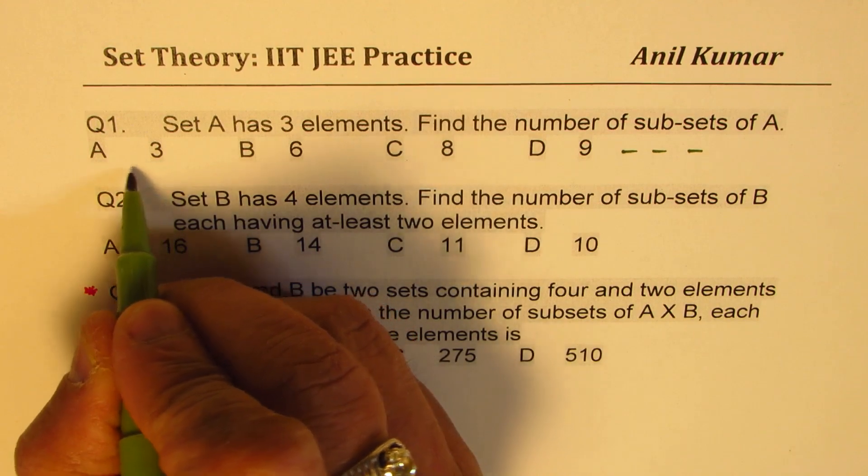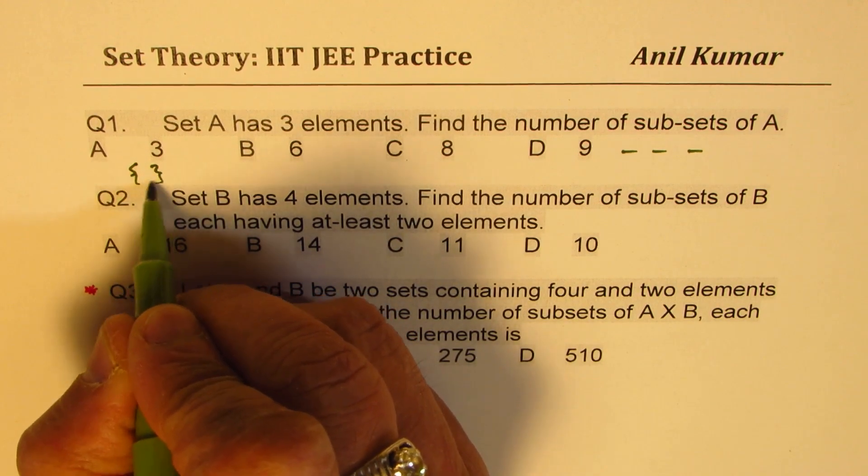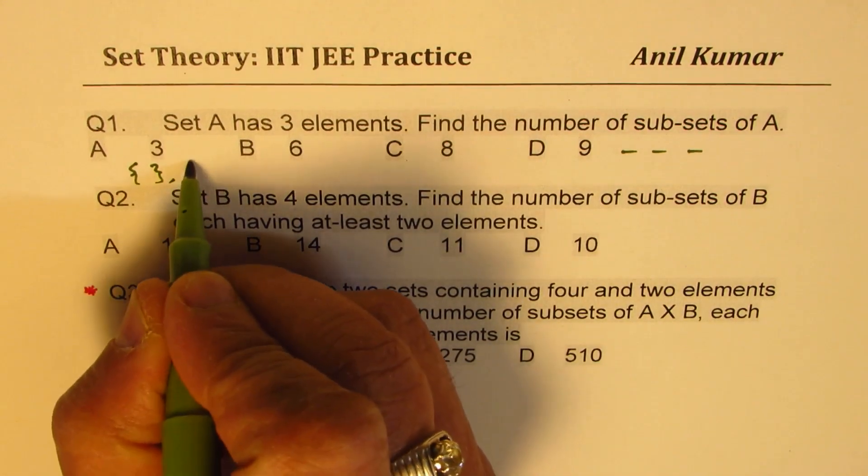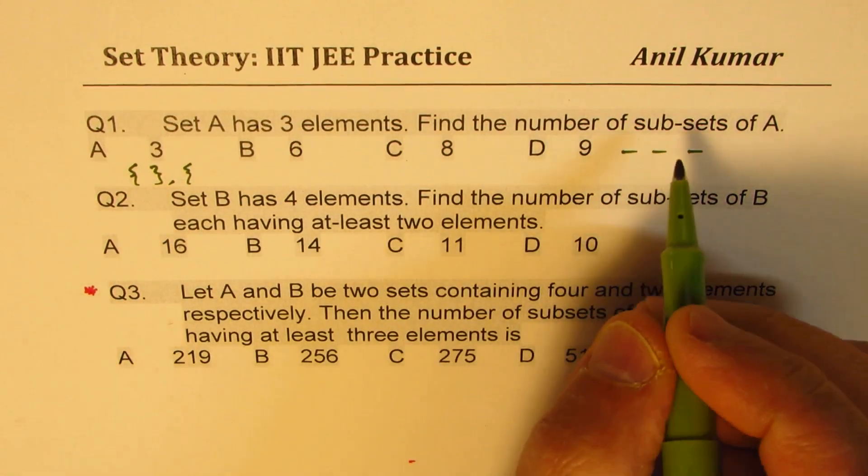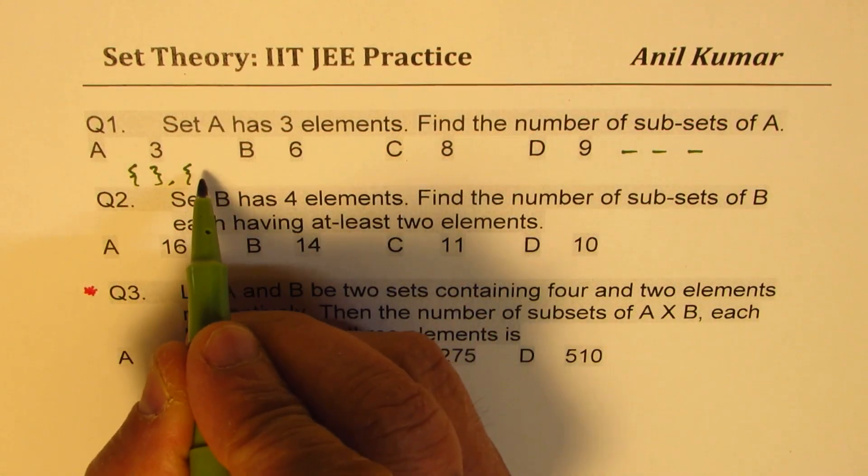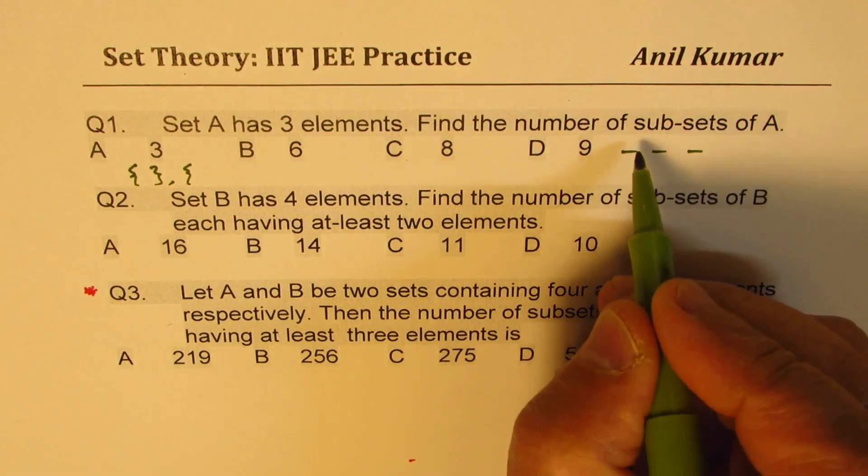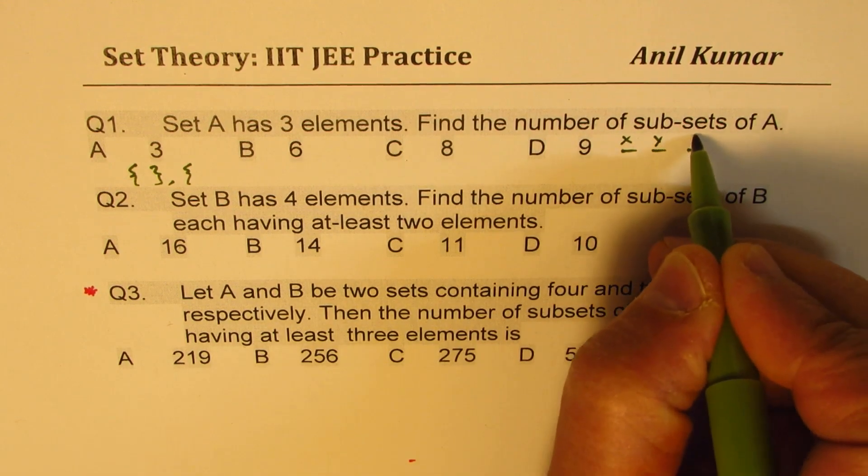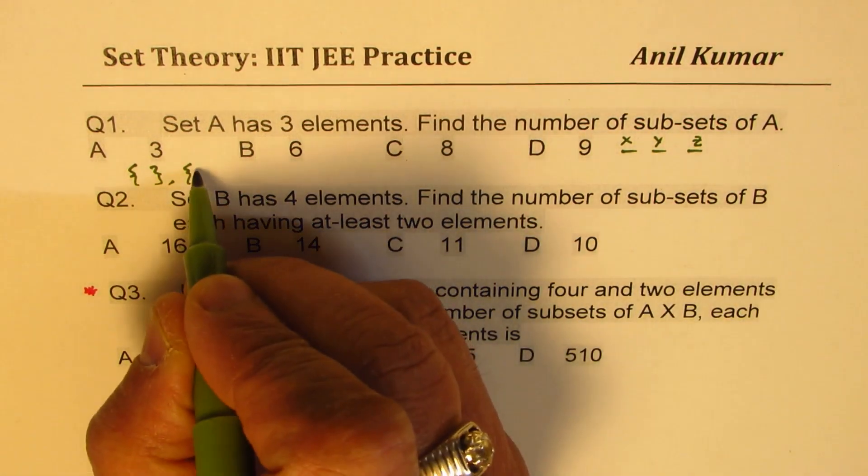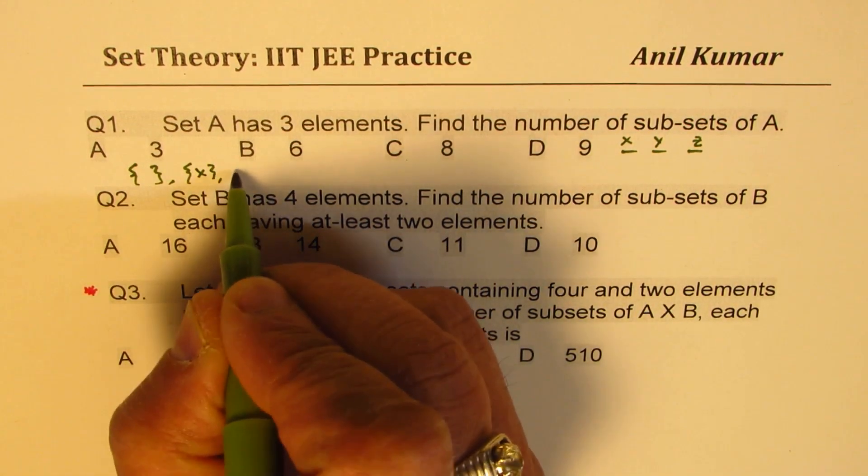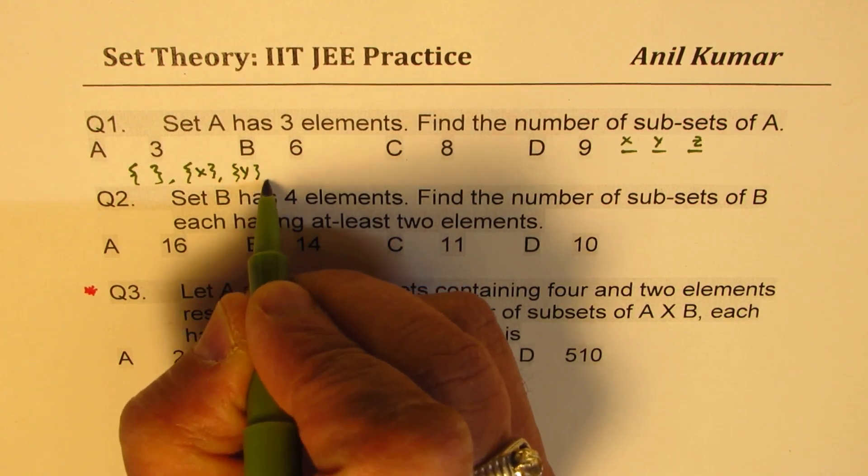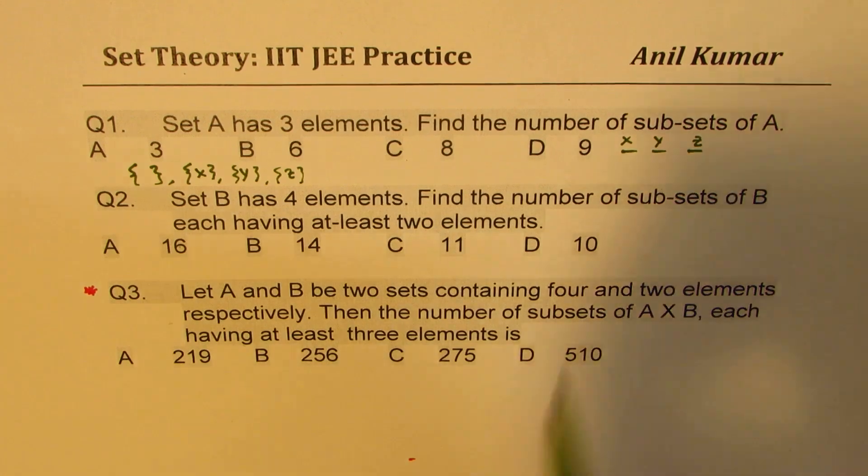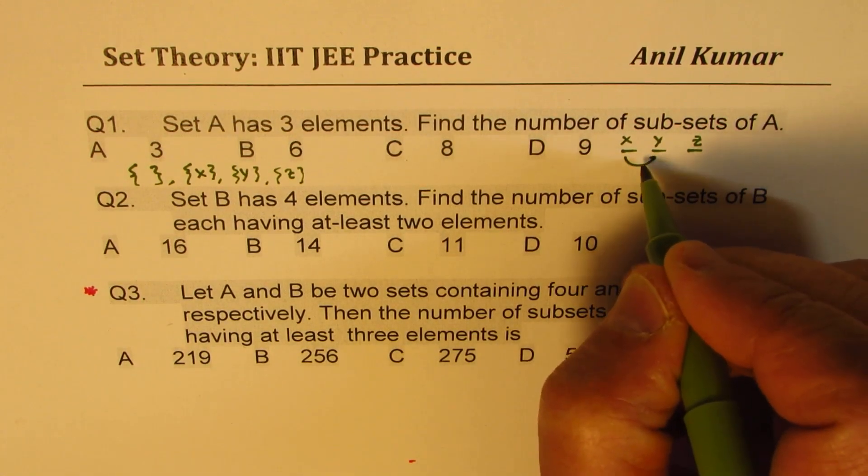So one of the sets will be where we do not have any elements. The next will be where we'll have one element, any one of them. So for example, if I say the elements are X, Y, and Z, it could be X, it could be Y, it could be Z. So one each. Or it could have a combination of two.